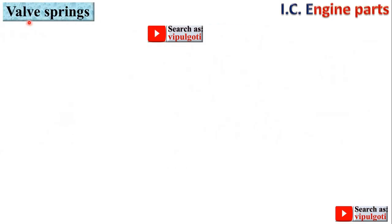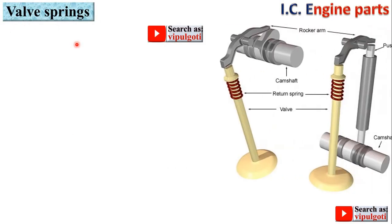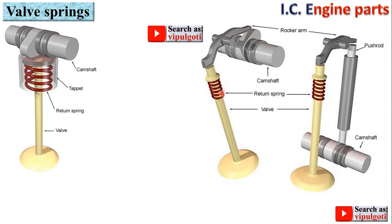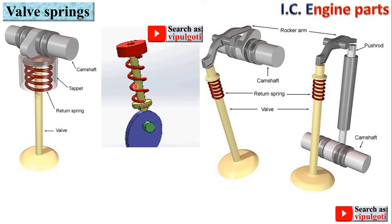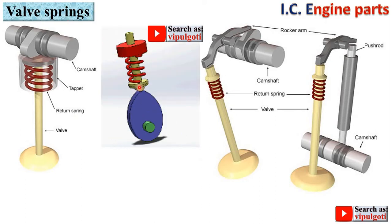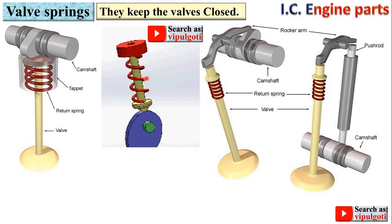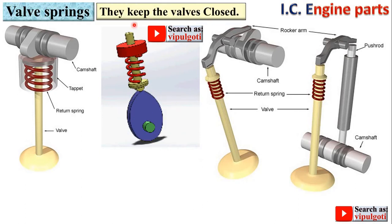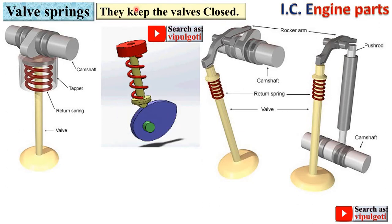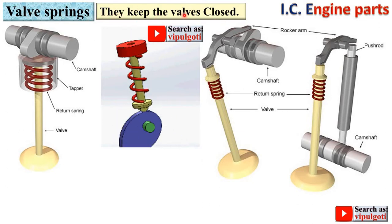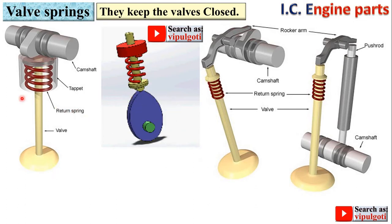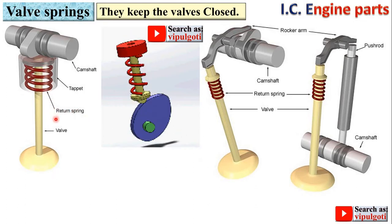Next part: valve springs. Here you can see valve springs in the image and in the animation as well. The function of the valve spring is to keep the valves in a closed condition — that is why it is called a return spring.